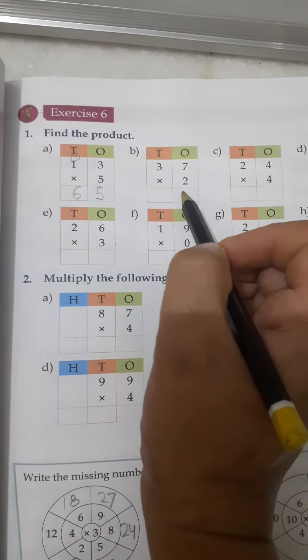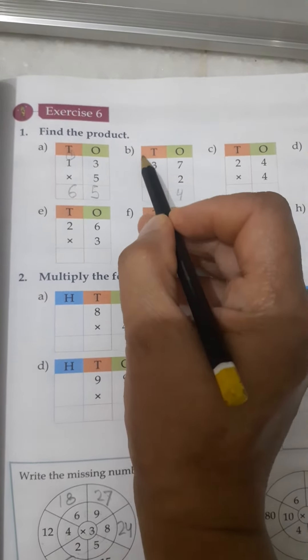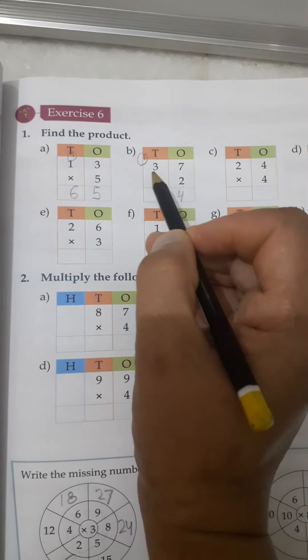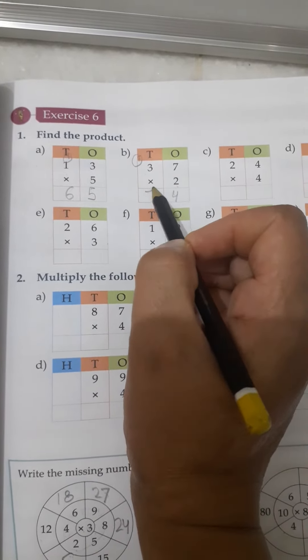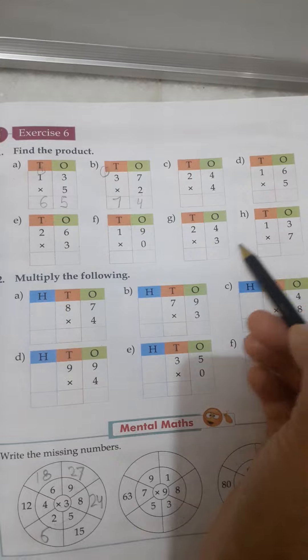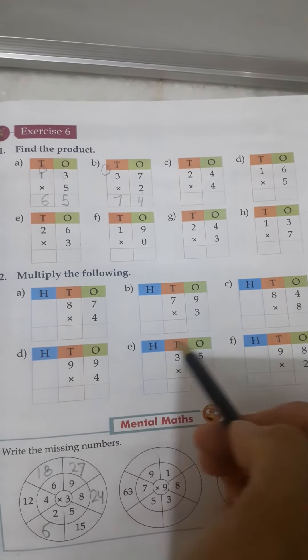Now second one. 2 sevens are 14. Carry 1. 3 twos are 6, 1, 7. In this way you have to complete question number 1 and question number 2 also.